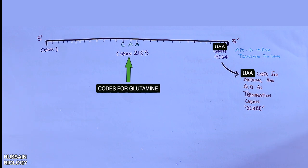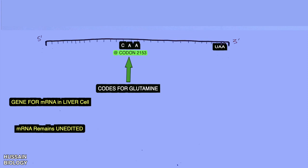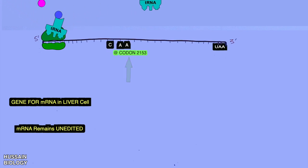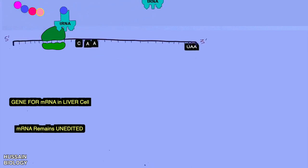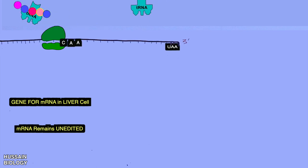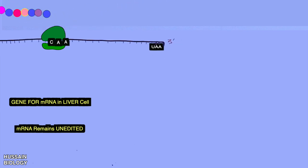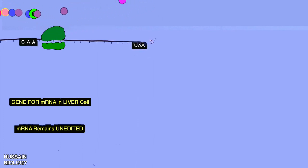So if the gene for this mRNA is present in the liver cells, the mRNA remains unedited. There will be ribosomal assembly and the protein synthesis will start. The charged tRNA will bring respective amino acids according to the codons present on mRNA. And when tRNA meets the 2153 codon, that's CAA, it will bring the glutamine amino acid here and will go on.